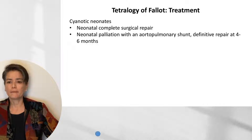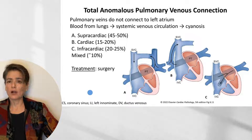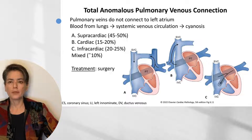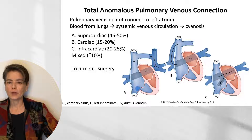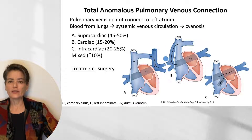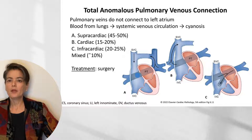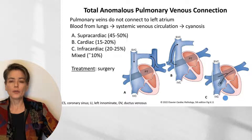The next entity is total anomalous pulmonary venous connection, also known as total anomalous pulmonary venous return. This is characterized by pulmonary veins that do not connect to the left atrium — instead, blood from the lungs goes into the right heart. A defect, classically an atrial septal defect, is required for survival, and mixing leads to cyanosis. This defect can be supracardiac — for example, with an anomalous left vertical vein attaching to the left innominate vein — intracardiac, such as through a coronary sinus, or infracardiac, or a mixture of these. Treatment is surgery.